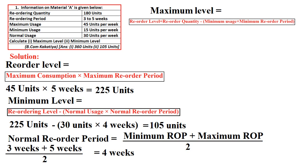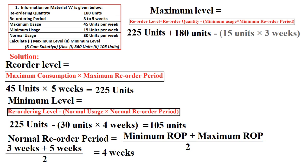For maximum level, apply the formula: reorder level plus reorder quantity minus minimum usage multiplied by minimum reorder period. That is 225 + 180 − (15 × 3) = 225 + 180 − 45 = 360 units is the maximum level.